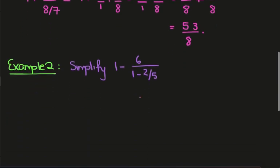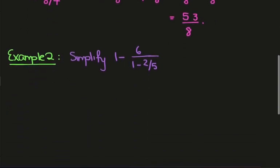Okay, so let's look at the next example. Here we have simplify 1 minus 6 over 1 minus 2 on 5. Again, we'll deal with this denominator 1 minus 2 on 5. Write that as a common denominator of 5. Cross multiplying we'll have 5 minus 2. So we end up with 3 on 5.